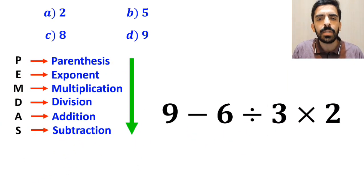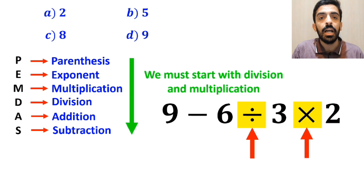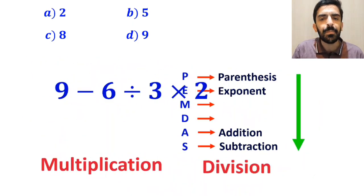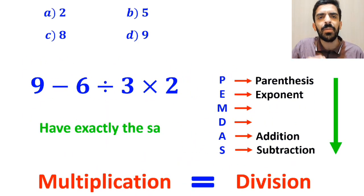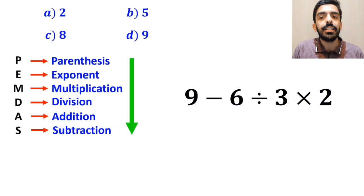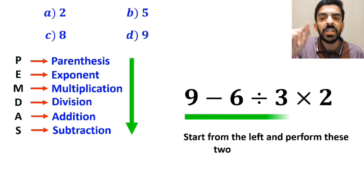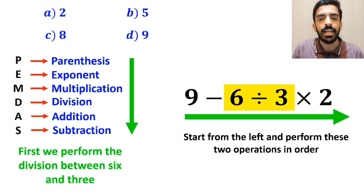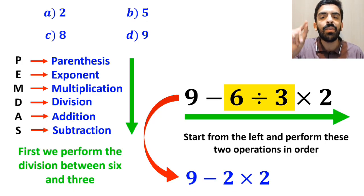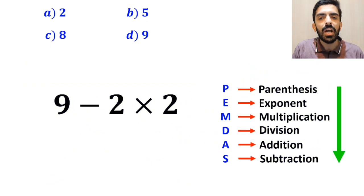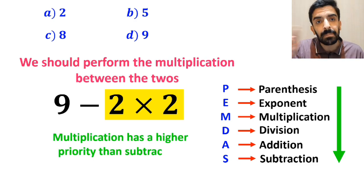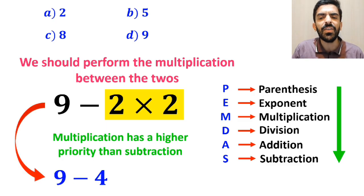Okay, according to the PEMDAS rule, we must start with the division and multiplication because these two operations have a higher priority than subtraction. However, it's very important to keep in mind that multiplication and division have exactly the same level of priority. In this situation, the best approach is to start from the left and perform these two operations in order. So first we perform the division between 6 and 3, and instead of the original expression we can write 9 minus 2 then times 2. In the next step, we should perform the multiplication between the twos because multiplication has a higher priority than subtraction. So this expression simplifies to 9 minus 4, and finally we get the answer 5.